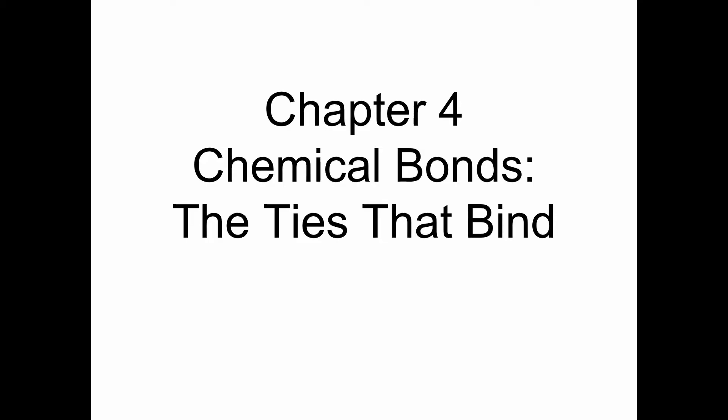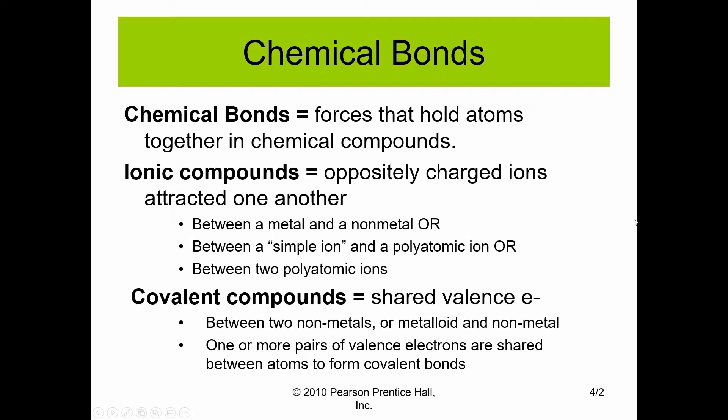In this video, we will discuss chapter 4 and take a more in-depth look at the electronic structure of atoms, as well as how they bond together to form chemical bonds. A chemical bond is a force that holds atoms together in chemical compounds. This bond is a conjunction of the electrons between these two atoms. We're going to primarily look at two different types of chemical bonds that can occur within compounds.